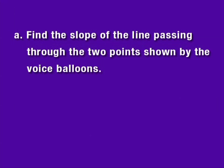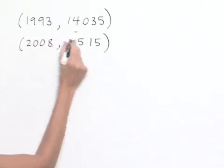Part A, find the slope of the line passing through the two points shown by the voice balloons. So we have the two points that were given to us.